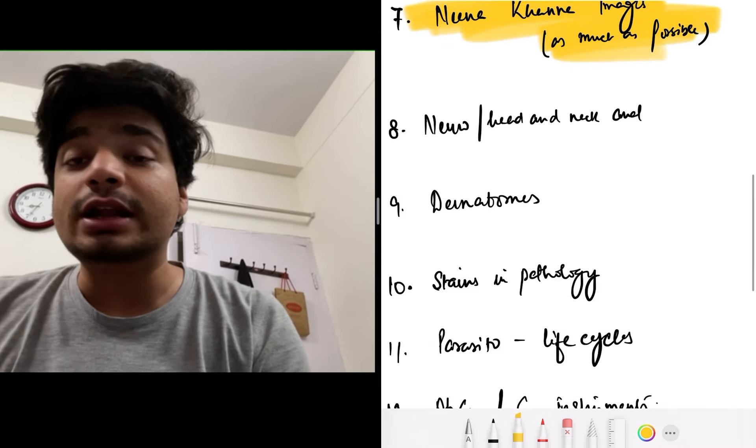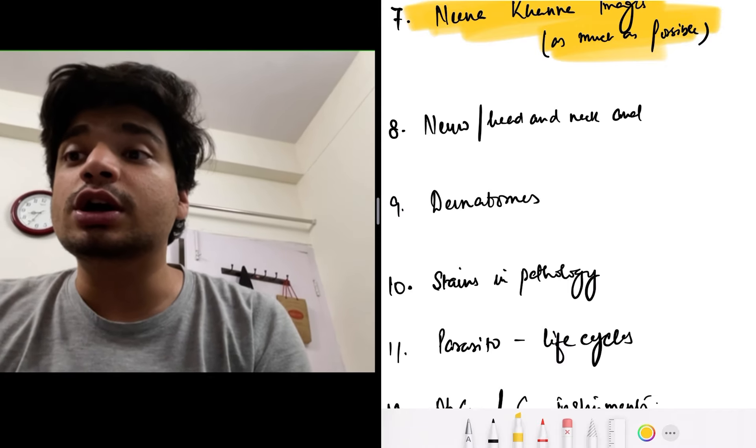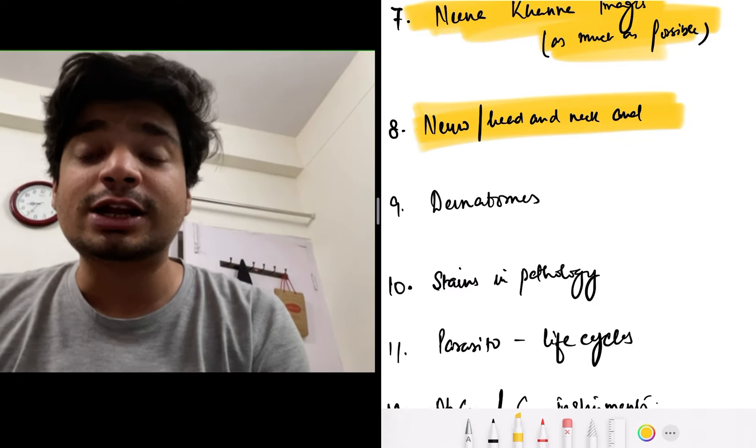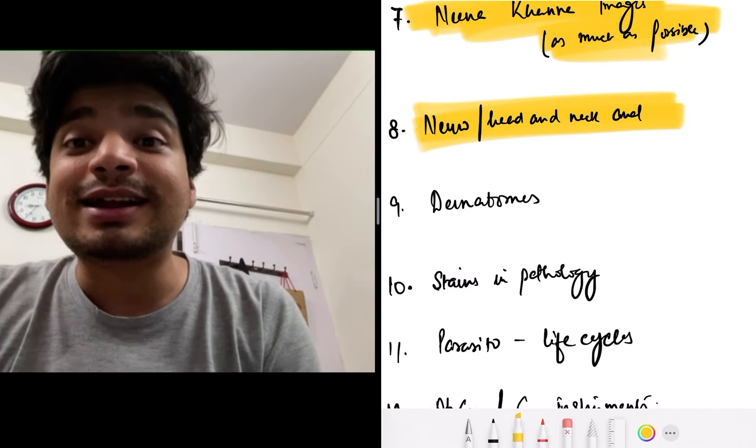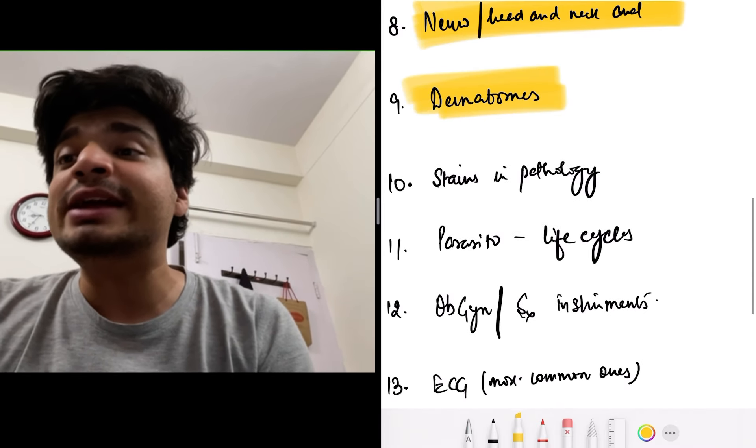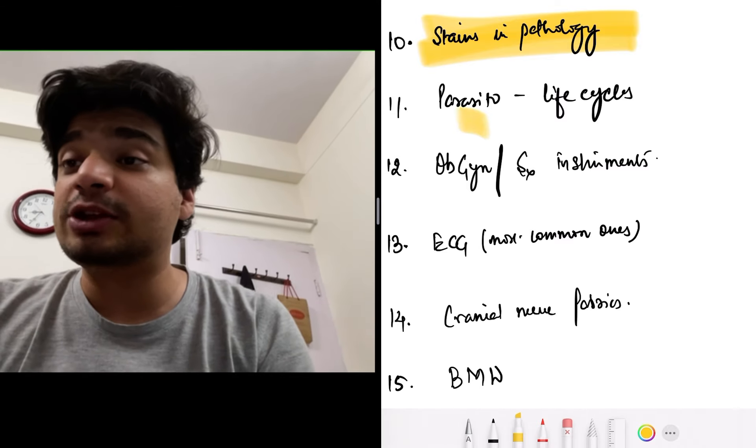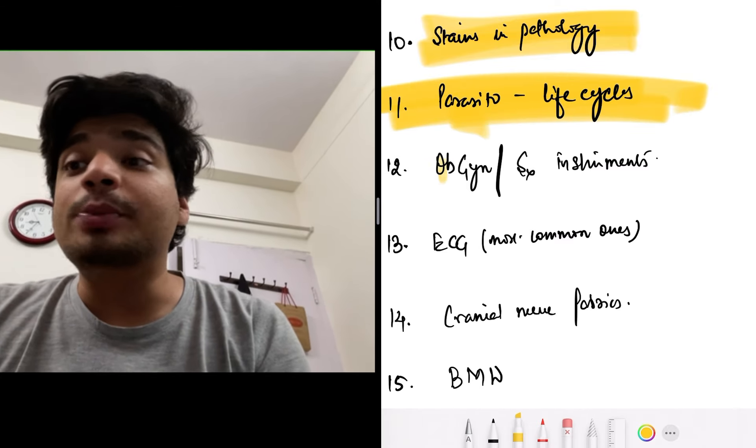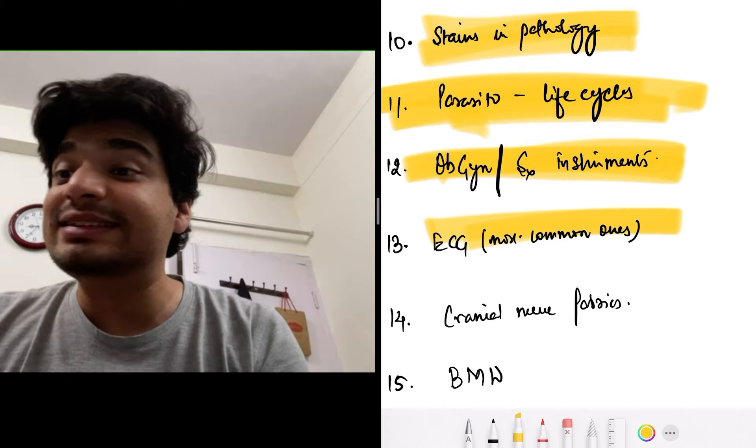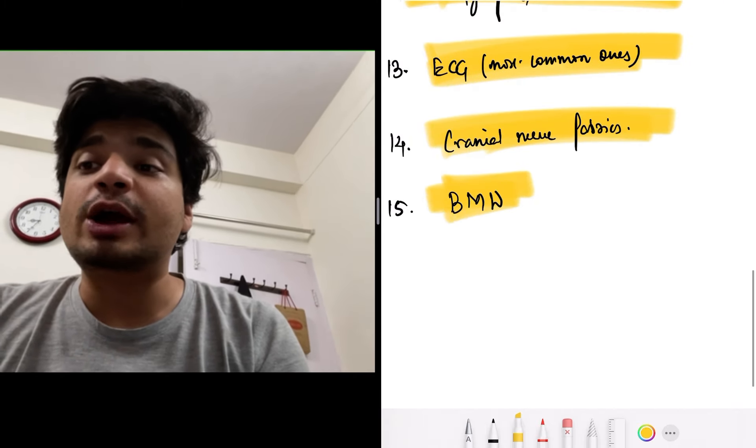Do the entire anatomy if it's possible, but definitely do head and neck anatomy and neuron anatomy along with brachial arcs and derivatives as far as embryology is concerned. And on the same line, dermatomes. In pathology, make sure you do the stains. Look at life cycles in parasitism, look at instruments, look at the most common ECGs, cranial nerve palsies, and biomedical waste management.